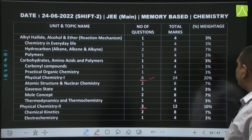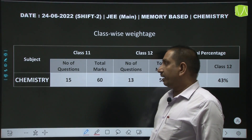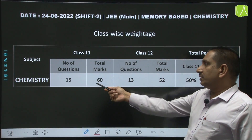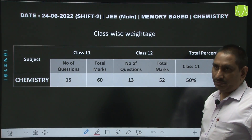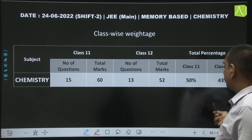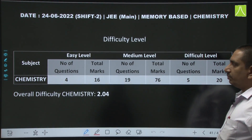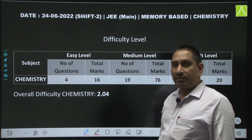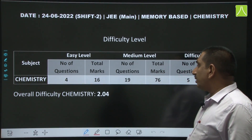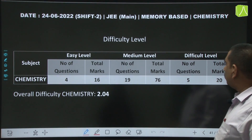Overall, looking at the paper: 15 questions came from 11th and 13 questions from 12th. We got 28 questions total. Those remaining 2 questions could also be from 12th. Overall, you can see the percentage is almost 50-50. Looking at the level of questions: easy level — 4 questions, moderate level — 19 questions, and difficult level — 5 questions.